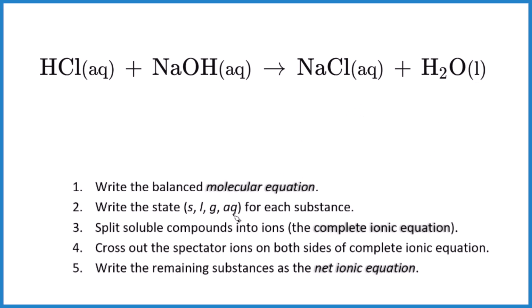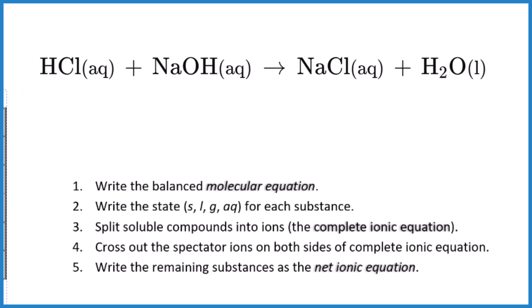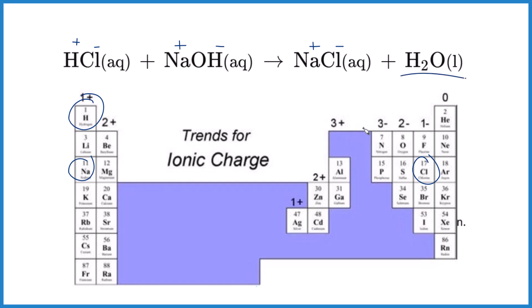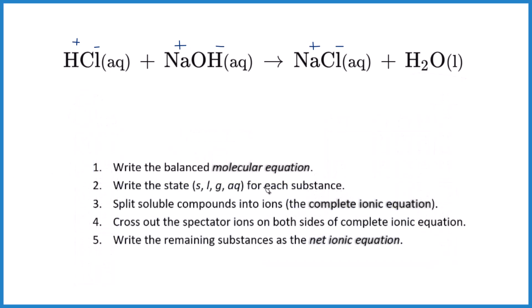The next thing you do is split the soluble compounds into their ions. That's going to give us the complete ionic equation. So we'll end up with hydrogen 1+, chloride 1−, sodium 1+ (it's in group 1), this OH polyatomic ion — that's the hydroxide ion — the whole thing is 1−. And then for water, it's a liquid, so we're not going to split it up.